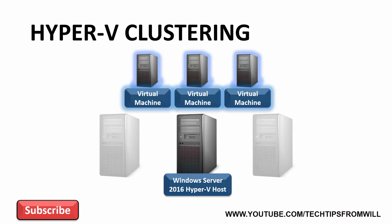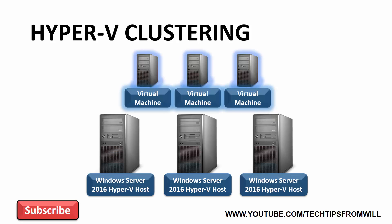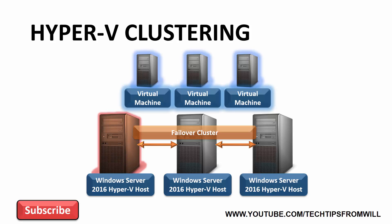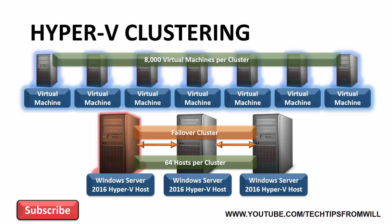When you cluster Hyper-V, you essentially combine multiple Windows Server 2016 Hyper-V host servers together and create what is called a failover cluster. When your hosting servers are clustered like this, they're all responsible for running the virtual machines in your environment together. And if one of the hosts in the cluster were to fail, the surviving hosts will continue to run the virtual machines. With Windows Server 2016, you can have up to 64 physical host computers in a single cluster, and each cluster can support up to 8,000 virtual machines. Hyper-V is an amazing, scalable technology and is more than capable of meeting the virtualization needs for most organizations.